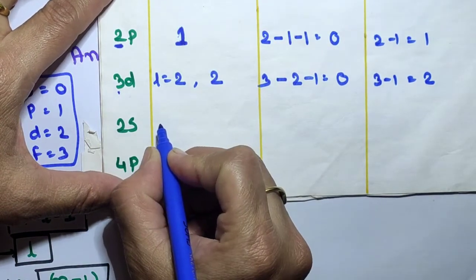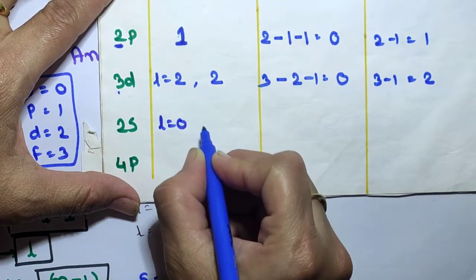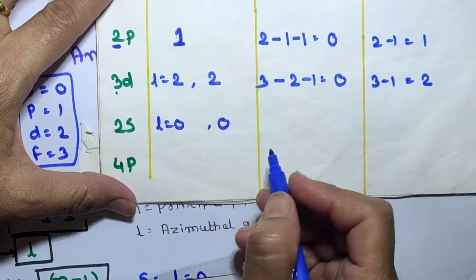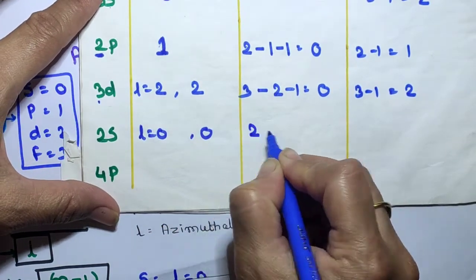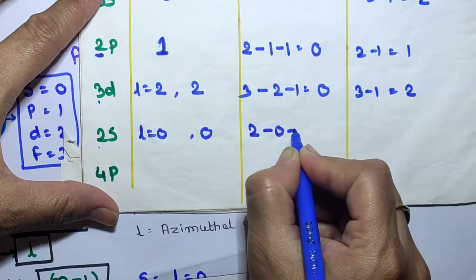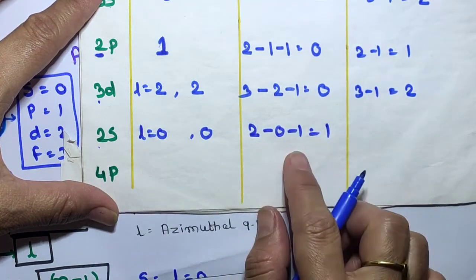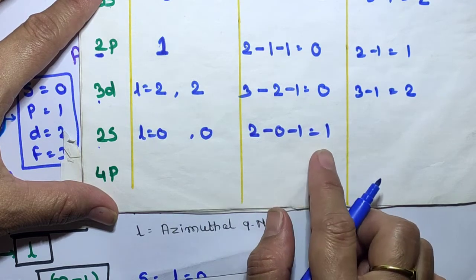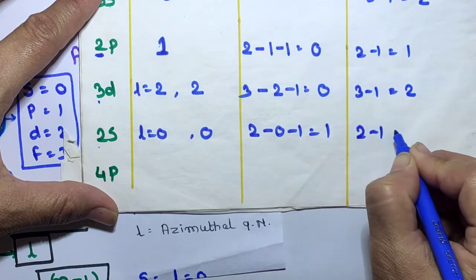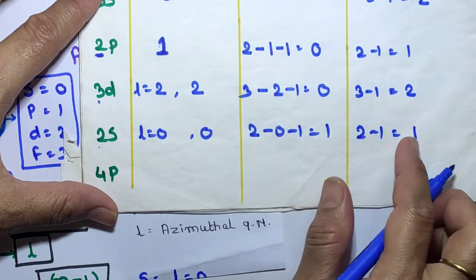Now, the 2s orbital. L = 0 for s orbitals, so angular nodes = 0. Radial nodes = n − L − 1 = 2 − 0 − 1 = 1. So the 2s orbital contains 1 radial node. Total number of nodes = n − 1 = 2 − 1 = 1, which equals 0 + 1 = 1.